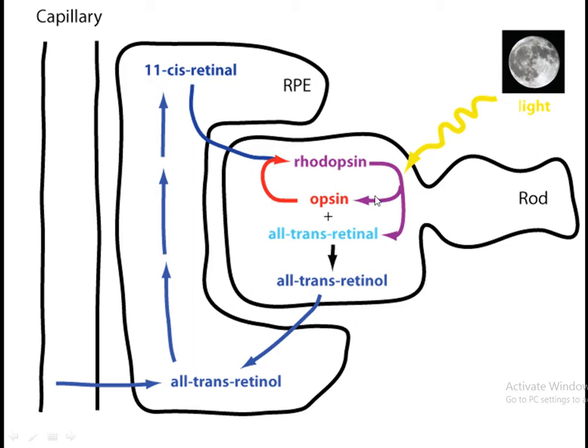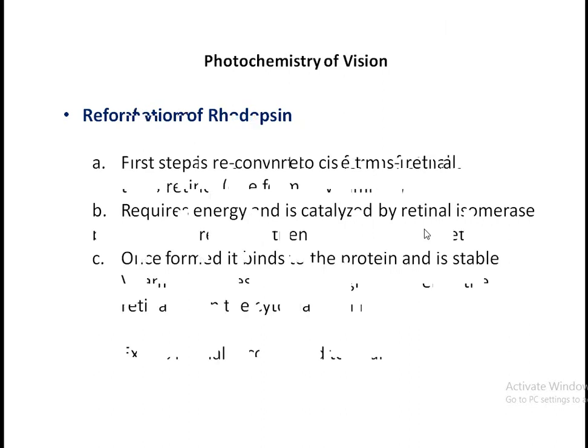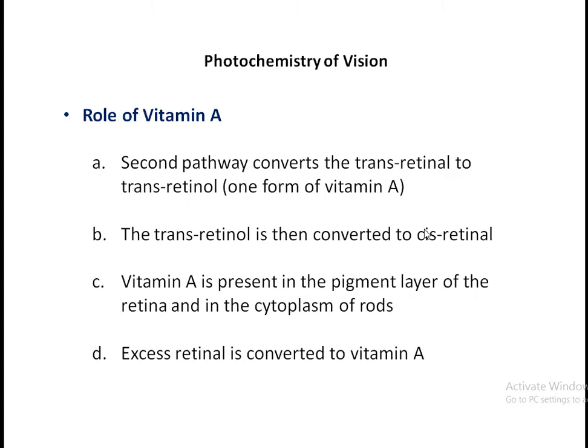With the combination of opsin, rhodopsin again forms in the darkness. This reaction takes place in rods. The first step is to reconvert to the cis form of retinol — it requires energy and is catalyzed by retinol isomerase. Once formed, it binds to the protein and is stable. The second pathway converts trans retinol to trans retinol in the presence of vitamin A.